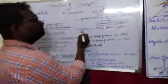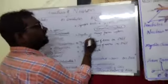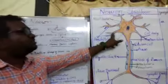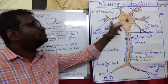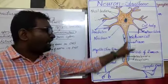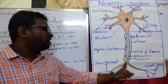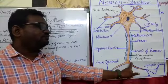These axons carry the information or impulse away from the cyton. The dendrites carry the information towards the cyton, whereas the axon carries the information away from the cyton.